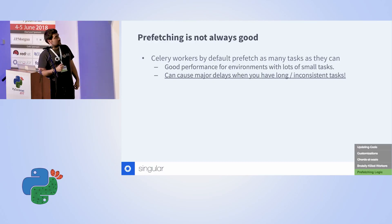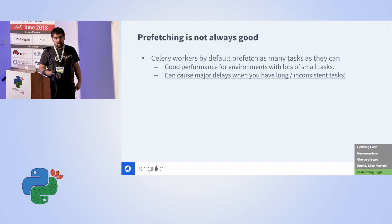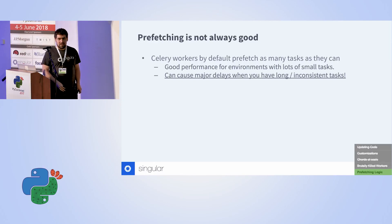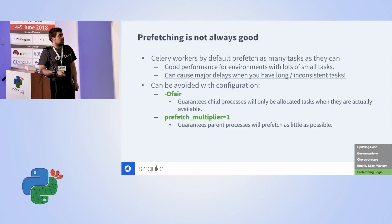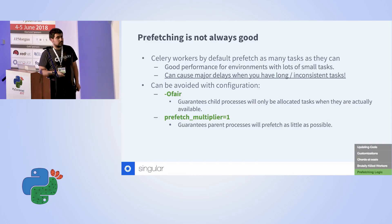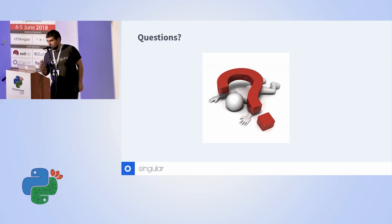The final thing we optimized is prefetching logic. Celery by default tries to send as many tasks as possible to child processes. When you have many short tasks this makes sense, but it's a problem when tasks are long and inconsistent — you don't want five 5-hour tasks queued on one worker while 19 others are idle. You can disable this with two parameters: acks_late, which means the master process won't send tasks to child processes unless they're available, and a prefetch multiplier setting so each worker only takes one task per child from the queue.